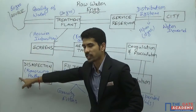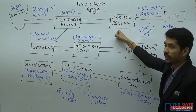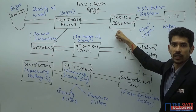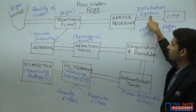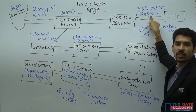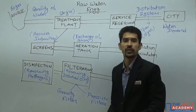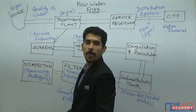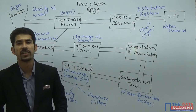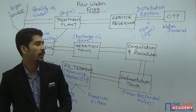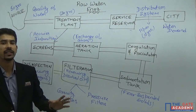After disinfection, the water is stored in the service reservoir, and from the service reservoir it is passed on to the distribution system, from where it is distributed to the various parts of the city. So this is the general layout of your raw water engineering. We will be discussing each and every treatment unit in detail.